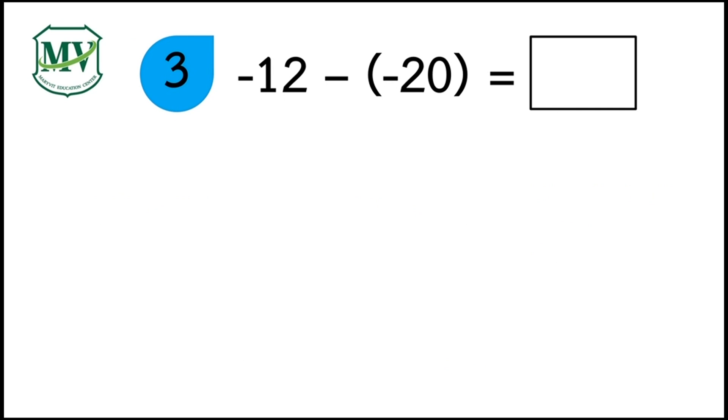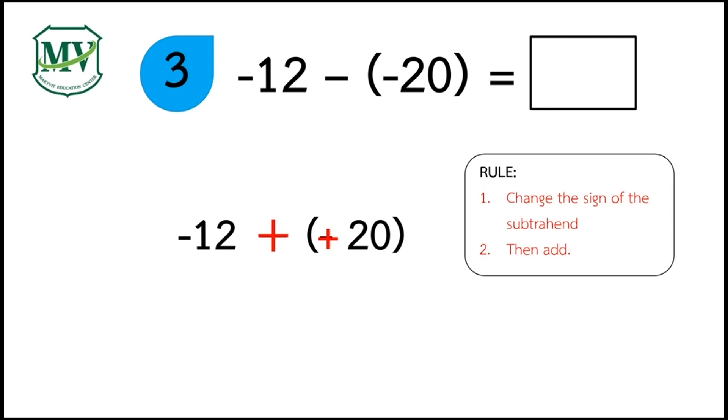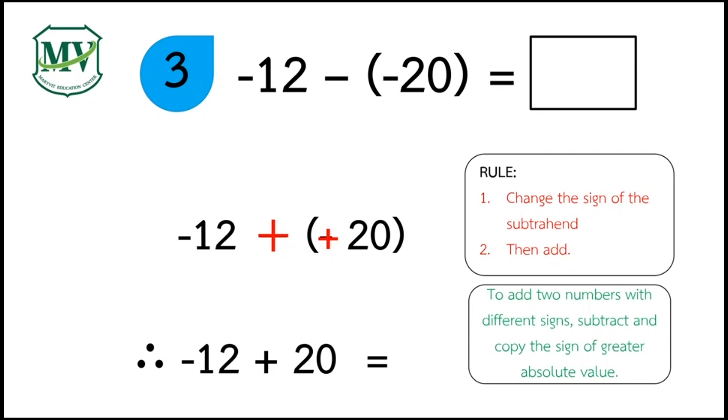Question number 3. Negative 12 minus negative 20 is equal to? Can you find the answer? Copy the Minuend negative 12. Change the sign of the subtrahend to positive 20. Then change subtraction to addition. Add negative 12 and 20. The answer is positive 8.